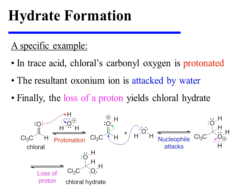In trace acid, chloral's carbonyl oxygen is protonated. The resultant oxonium ion is attacked by water, and the carbonyl pi-bonding electrons are pushed onto oxygen. Finally, the loss of a proton from the last oxonium ion yields chloral hydrate.